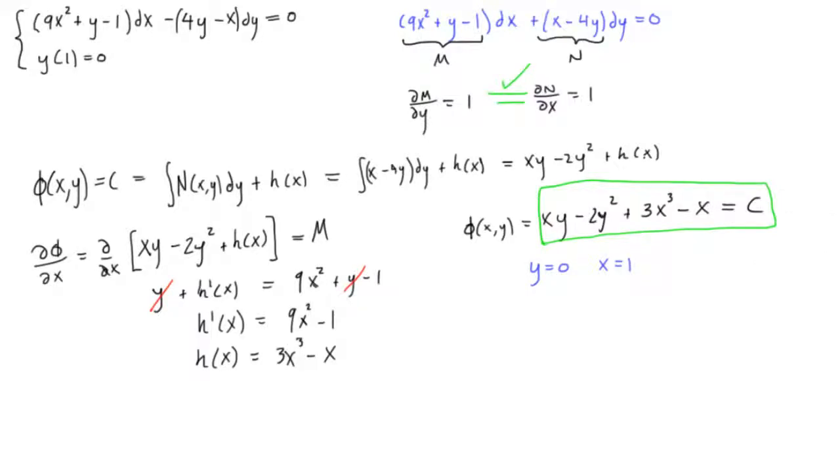But regardless, we can plug these in. So when we do that, we will get the first term will be 1 times 0. So that will just be 0. I'll write that a little cleaner. 0 minus 0, right, because that y becomes a 0, plus 1, plus 3 minus 1 is equal to c. And we want to solve for what the c is. And obviously, c is going to be equal to 2.